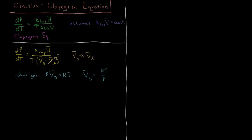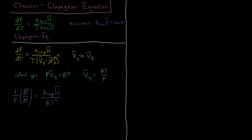After some rearranging, what we end up with is: (1/P)(dP/dT) equals the molar enthalpy of vaporization divided by RT². This comes from substituting in the ideal gas molar volume and then dividing both sides by pressure.